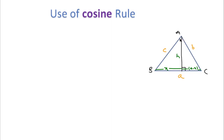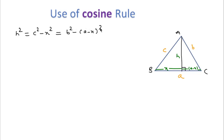By using Pythagoras theorem, for the first right triangle: h² = c² − x². For the second right triangle: h² = b² − (a − x)². Equating both: c² − x² = b² − (a − x)². Expanding: c² − x² = b² − a² − x² + 2ax. We can cancel the x² terms.